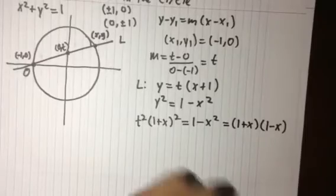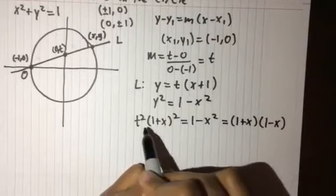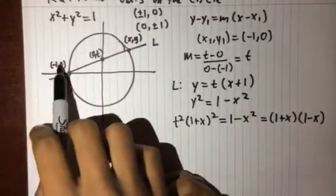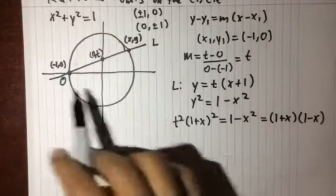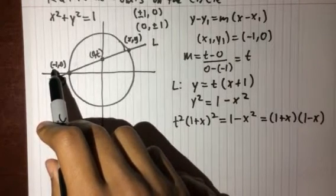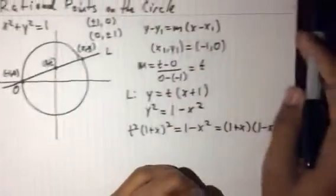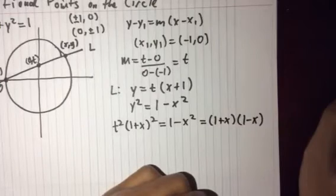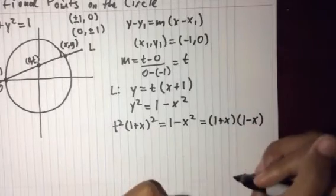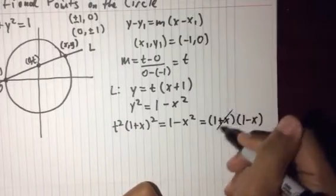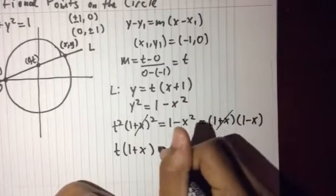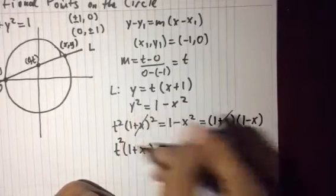So one thing you might see is that for a fixed t we have a quadratic in x. If we go back here we know that negative one zero is a solution to the system because it's both on the line and on the circle. And so we can cancel out a factor of x plus one from this because that's one of our solutions. And if t and x are rational then both solutions have to be rational. So we cancel out a 1 plus x and then we get t times 1 plus x equals 1 minus x.